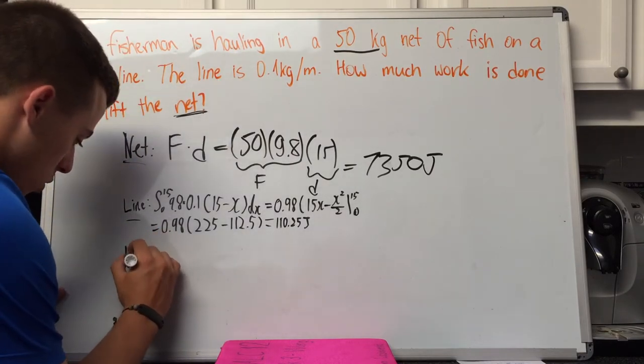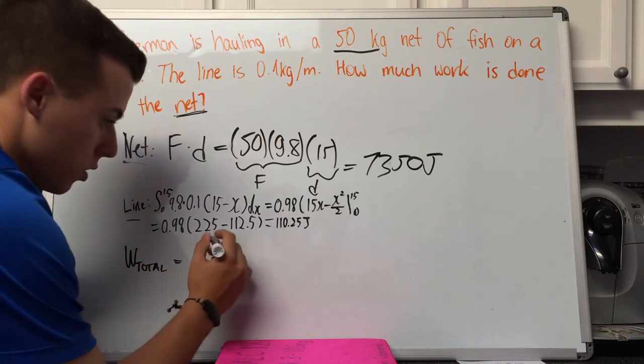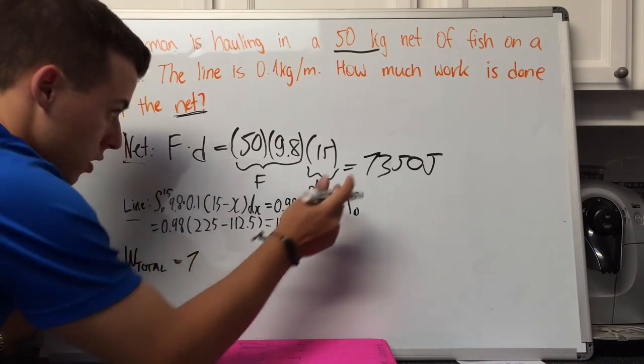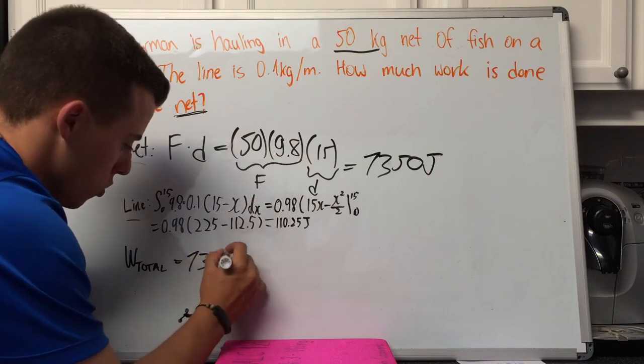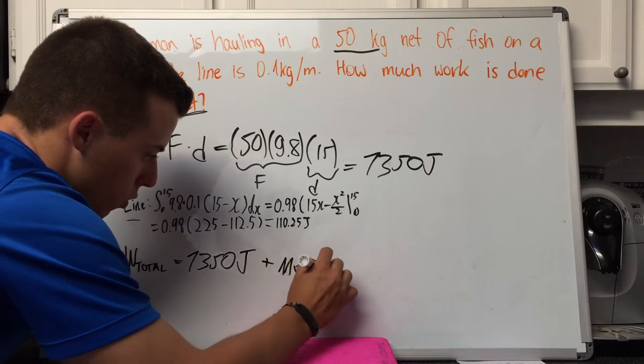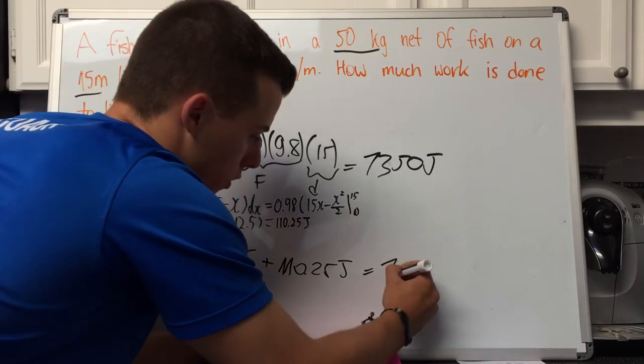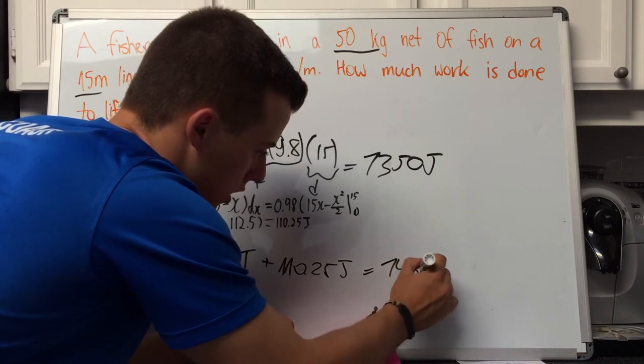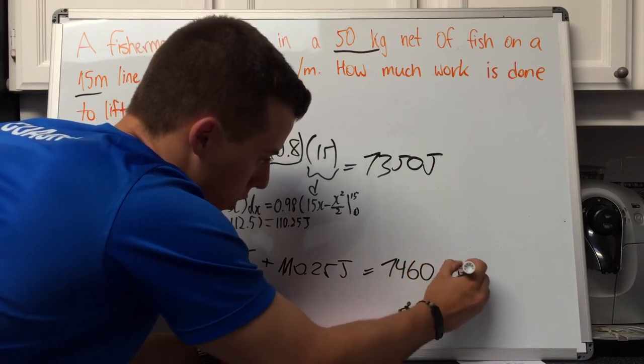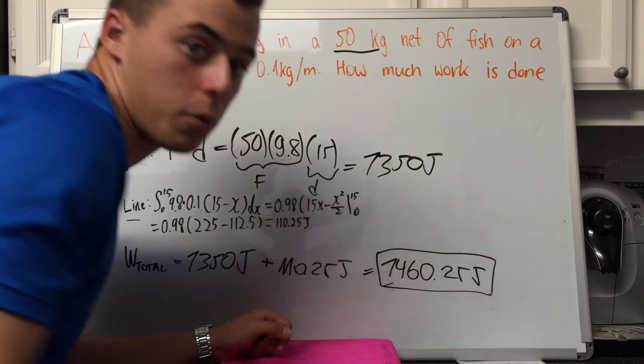Work total equals 7,350 joules plus 110.25 joules, for a grand total of 7,460.25 joules. Thank you.